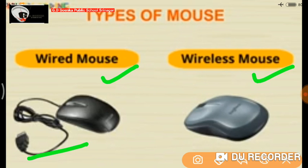A Wireless Mouse is the type of mouse which does not have any wire attached to the CPU. It works just like a remote control of a TV.